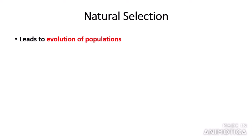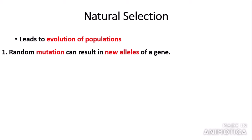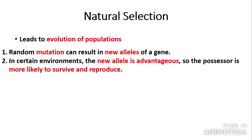How does natural selection work? First, a random mutation — a change in a DNA base sequence — can result in new alleles of a gene. In certain environments, the new allele is advantageous. Quite a lot of the time mutations are harmful, but in the case of natural selection they are advantageous. The new allele results in a feature or characteristic that is advantageous, meaning the possessor is more likely to survive and reproduce as they are more well adapted to their environment.